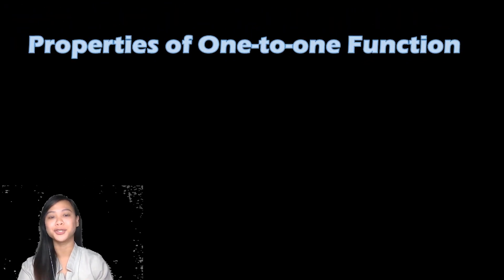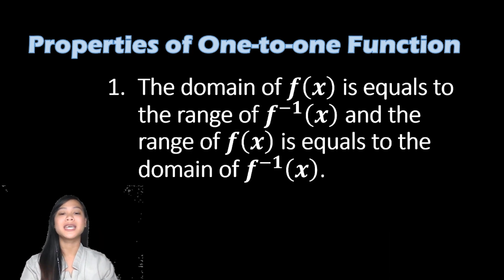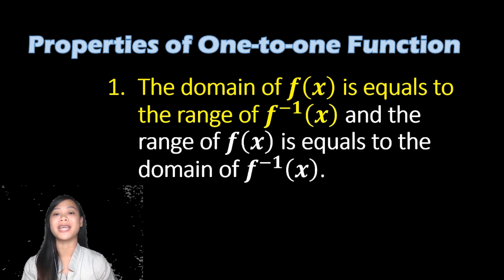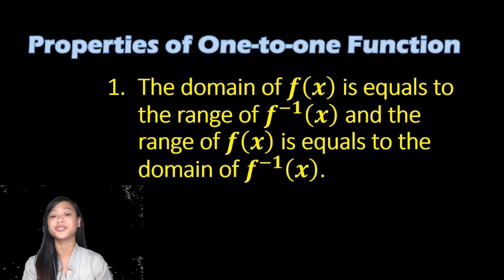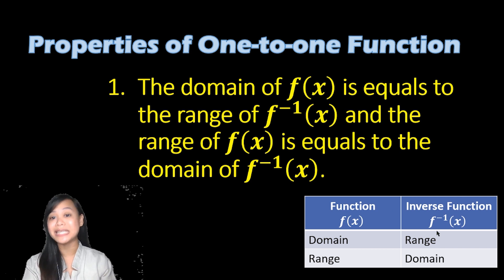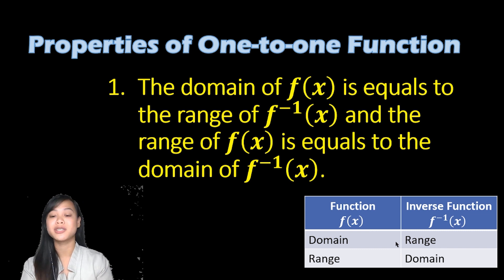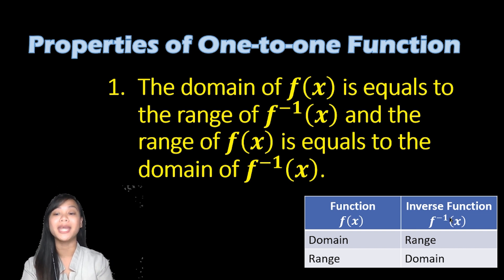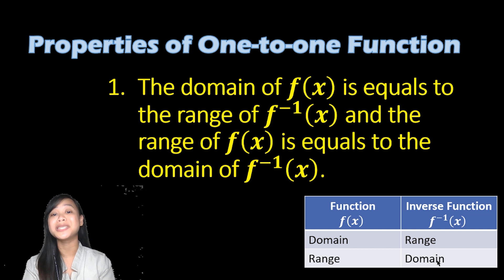Now let's discuss the different properties of one-to-one functions. The first property is that the domain of the function f(x) is equal to the range of the inverse of x, and the range of the function is equal to the domain of its inverse. Looking at the table, the domain of the function equals the set of y values in the inverse function, and vice versa.